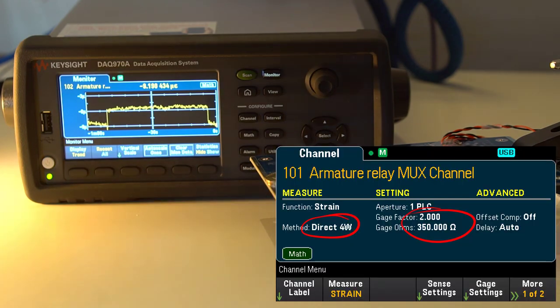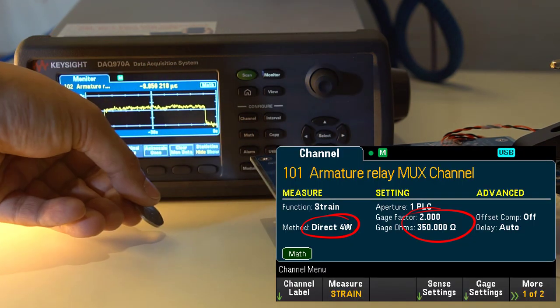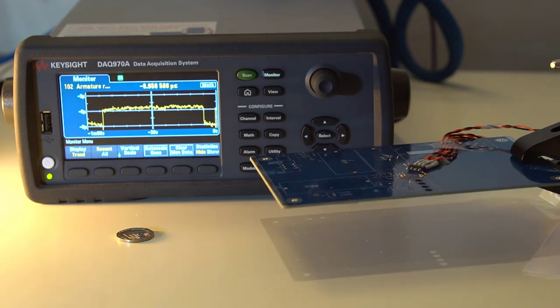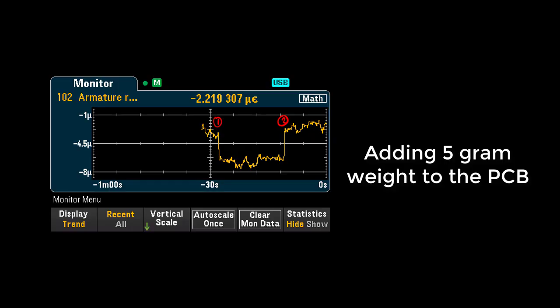The instrument can directly interface with the strain gauges in several topologies, and the output can be nulled using a math formula. It was possible to detect slight board flex from just a few grams weight, even without using a bridge arrangement. The measurements were repeatable and appeared fairly clean from noise.